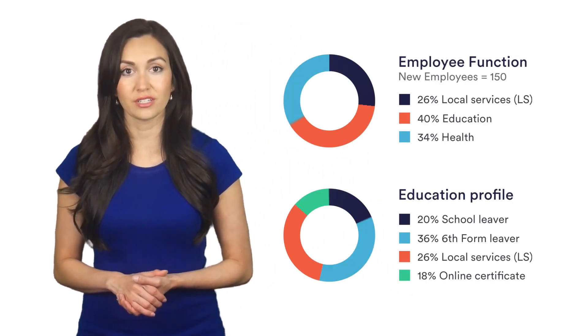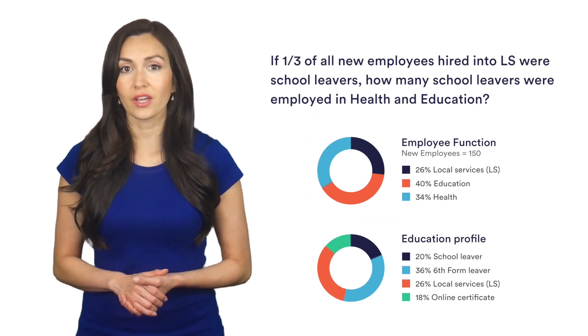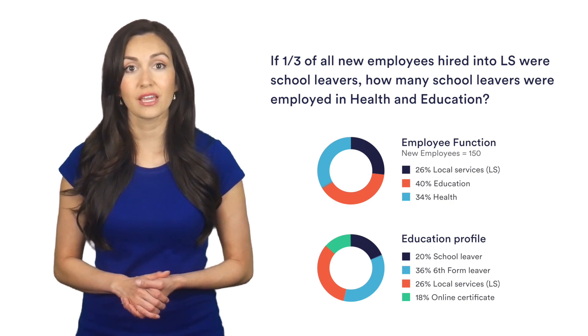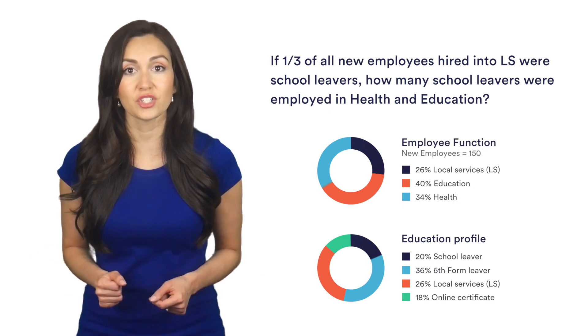As its name suggests, a data interpretation question is asking you to look at data. It might be in a graph or a chart or even a paragraph of text. Let's look at these two charts. There are two different sets of information: employee functions and education profiles. If one third of all new employees hired into LS were school leavers, how many school leavers were employed in health and education?